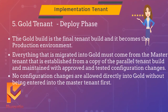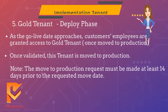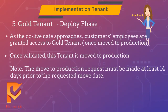Gold Tenant. The gold build is the final tenant built and it becomes the production environment. Everything that is migrated into gold must come from the master tenant that is established from a copy of the parallel tenant build and maintained with approved and tested configuration changes. No configuration changes are allowed directly into gold without being entered into the master tenant first. As the go-live date approaches, the customer's employees are granted access to the gold tenant after move to production. Once validated, this tenant is moved to production. Note: the move to production request must be made at least 14 days prior to the requested move date.